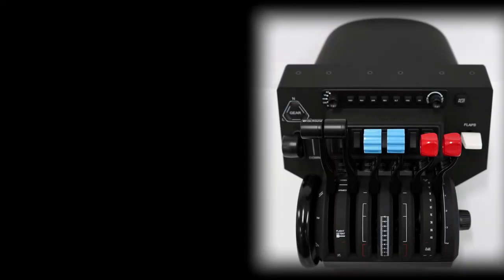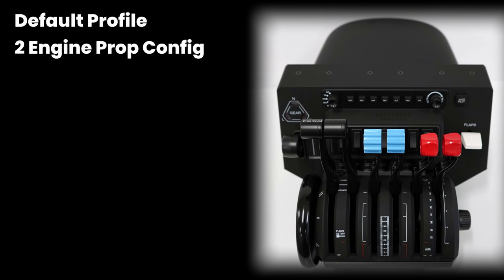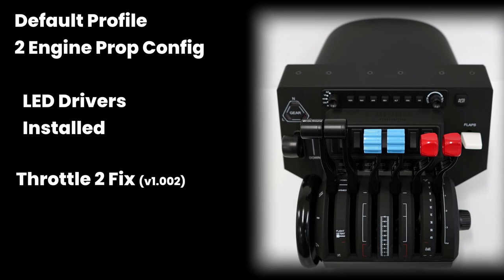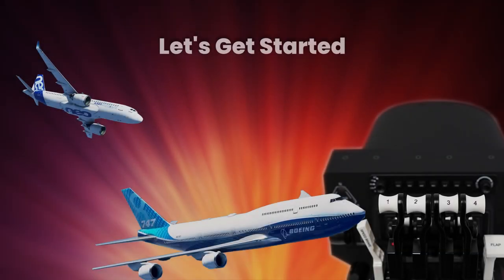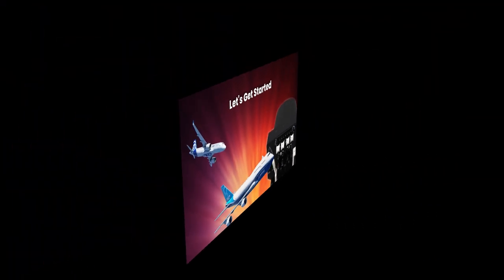So just a quick recap. The default profile for the Bravo Throttle Quadrant is a two-engine prop. My configuration already has the LED light drivers installed as well as the fix for Throttle 2, which is not working currently in the default profile. We've created a new master profile — Bravo Tango Quebec dash template — with all fixes applied and the switch panel on the Throttle Quadrant reconfigured.